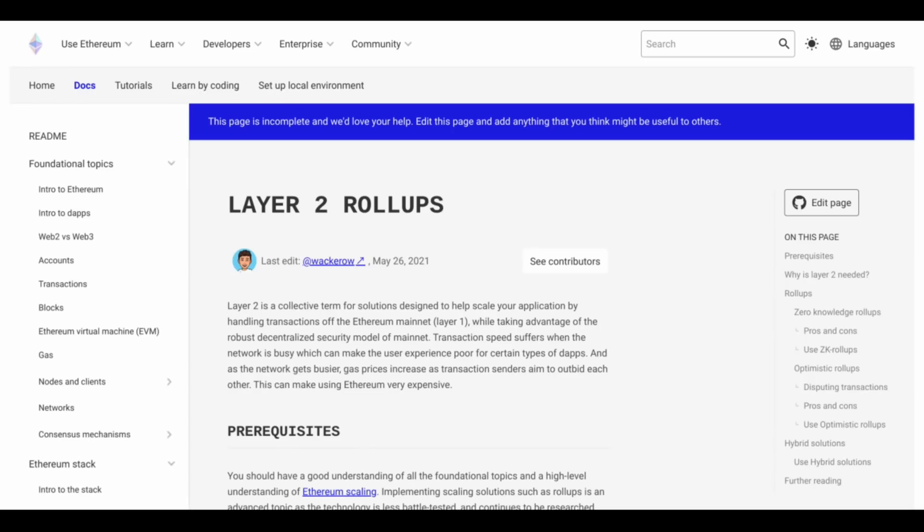So Ethereum is deprioritizing scaling of the mainnet via sharding, and they're going to focus all their attention on moving from proof of work to proof of stake. Their excuse as to why this is okay is that layer two, according to them, is booming. We don't need to worry about scaling the mainnet right now because layer two is so good.